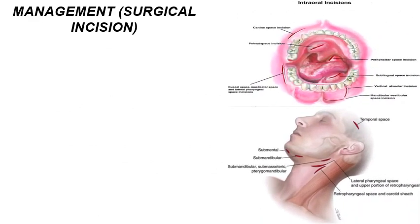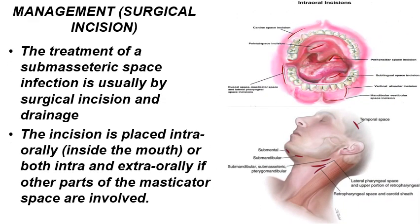Management and surgical incision of the submasseteric abscess is usually done intraorally, sometimes accompanied by an extraoral incision if the intraoral approach cannot evacuate the abscess completely. The intraoral incision is carried out along the external oblique ridge at the anterior border of the ramus. The extraoral incision is made around the angle of the mandible. The intraoral incision is more preferable to avoid facial scarring.